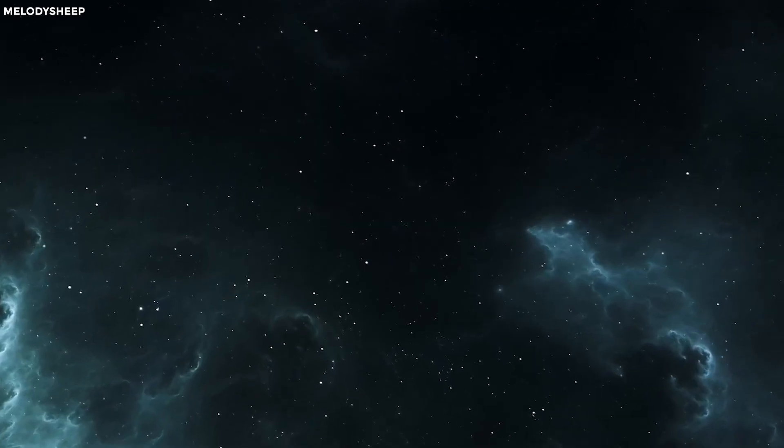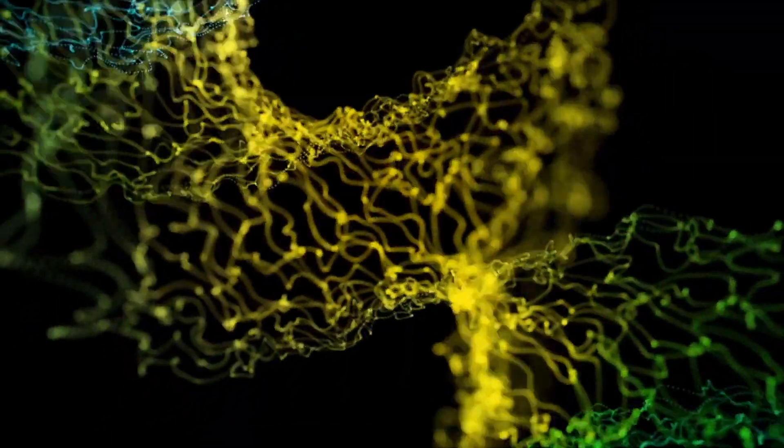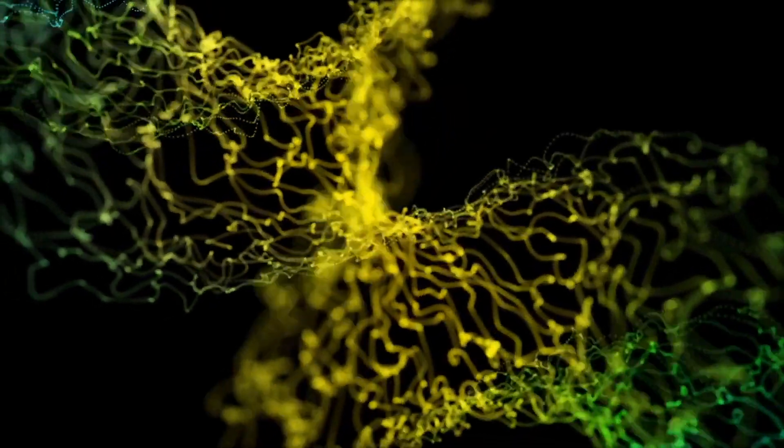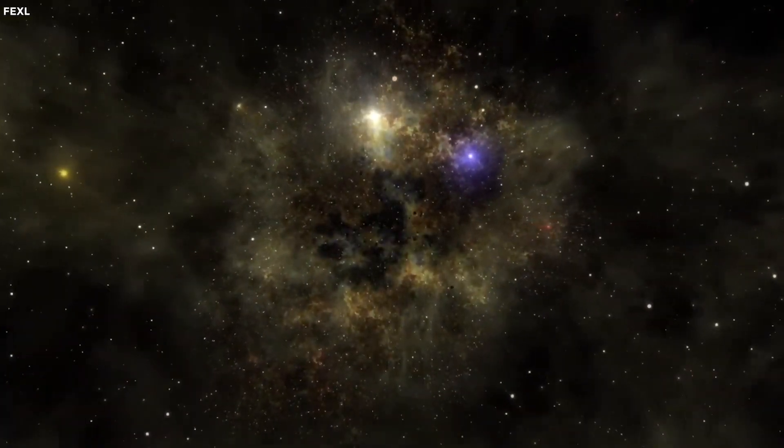As the universe expanded, matter began to clump together under the influence of gravity, forming stars, galaxies, and eventually planets like our own Earth. These structures grew larger and more intricate over time, giving rise to the diverse phenomena we observe today.